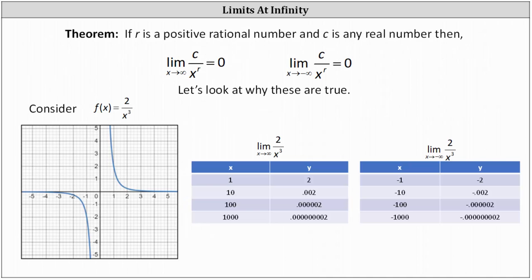One of the most important theorems when determining limits at infinity: if r is a positive rational number (the exponent on x in the denominator) and c is any real number (in the numerator), then the limit as x approaches infinity of c divided by x to the power of r equals zero, and the limit as x approaches negative infinity of c divided by x to the power of r equals zero. This is because the numerator is a constant while the denominator is increasing or decreasing without bound, so the function value approaches zero.